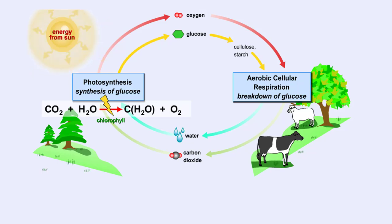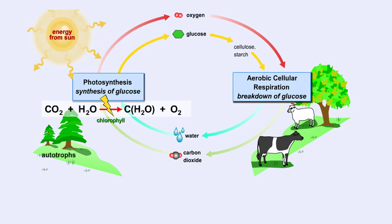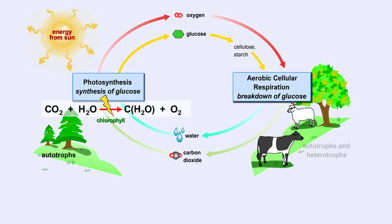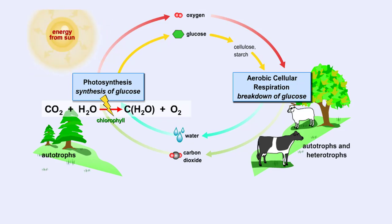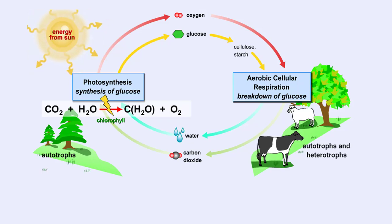Plants and other photosynthetic organisms like algae are termed autotrophs because they can make their own food, while animals, termed heterotrophs, must obtain their food from other sources. During the metabolism of food molecules, animals and plants give off carbon dioxide and water.